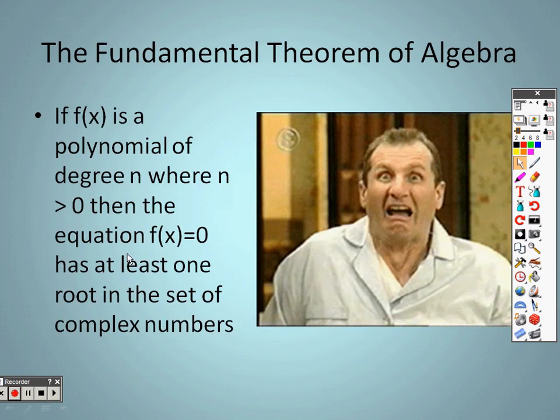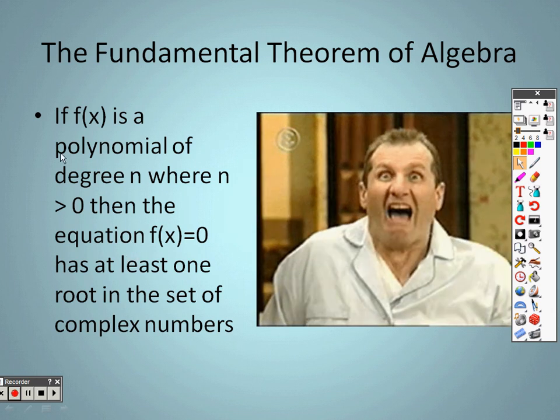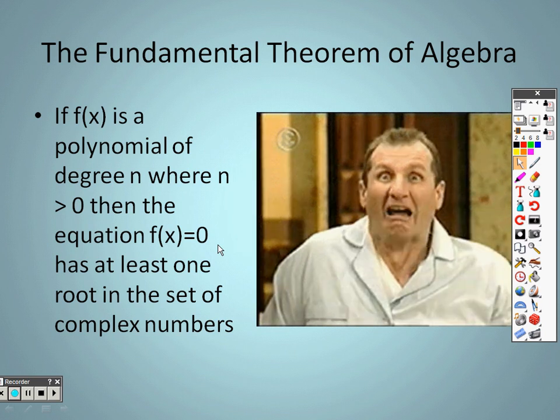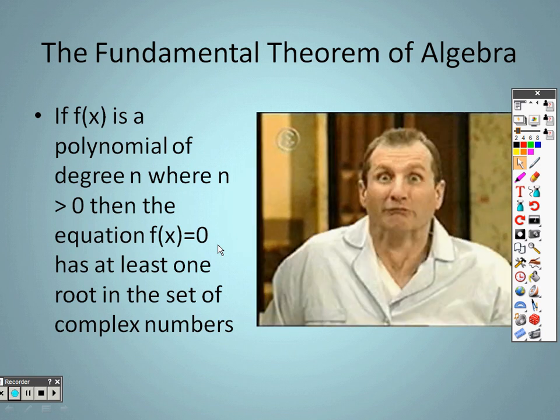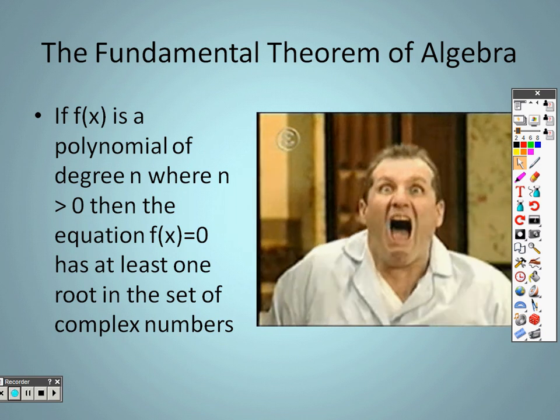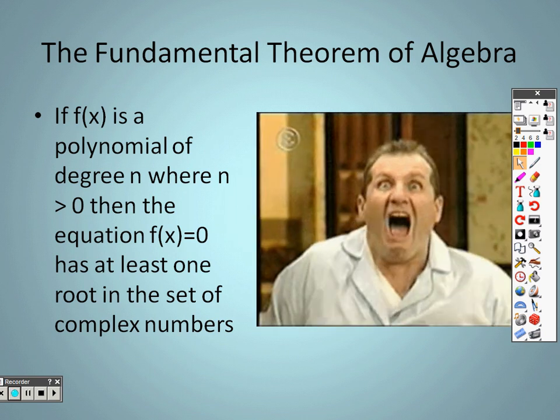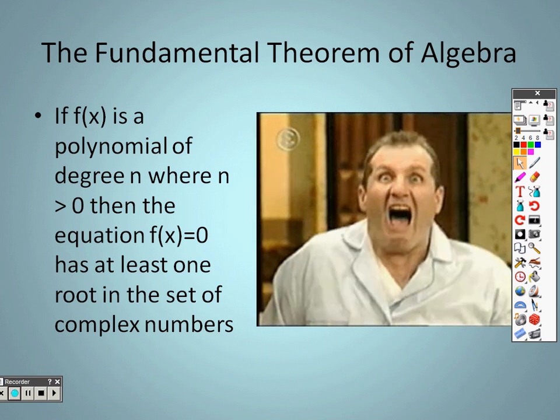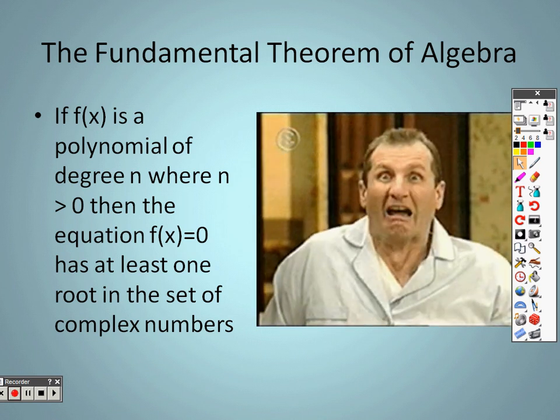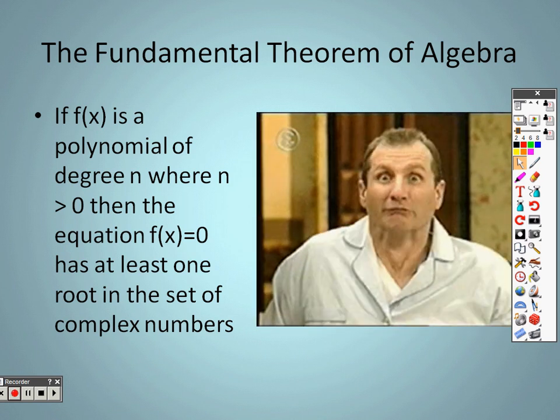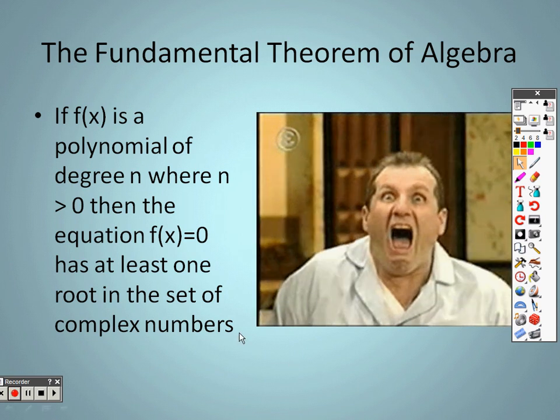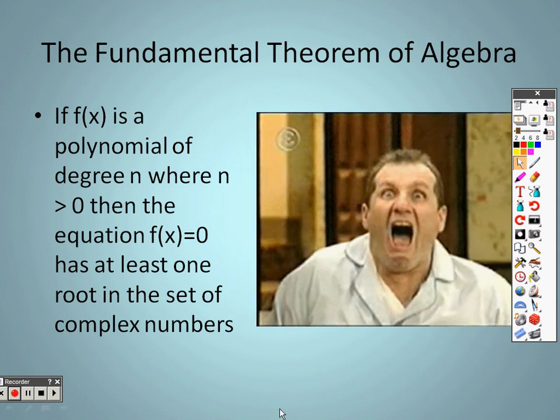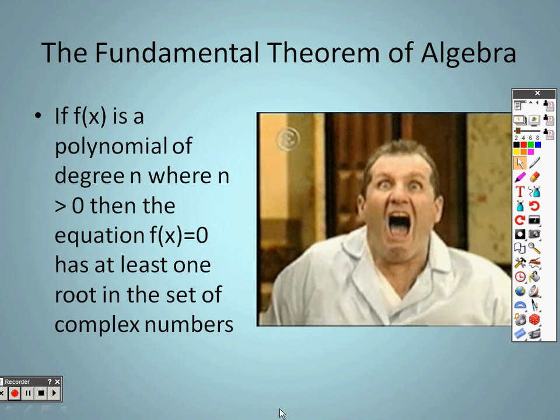What it's saying is the Fundamental Theorem of Algebra is: if f(x) is a polynomial of degree n where n is greater than 0, meaning we're talking it has an exponent and the exponents are not negative and they are not 0, then the equation f(x) = 0 has at least one root in the set of complex numbers. So it has at least one root somewhere in the problem.